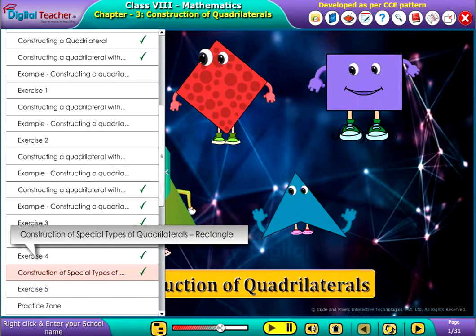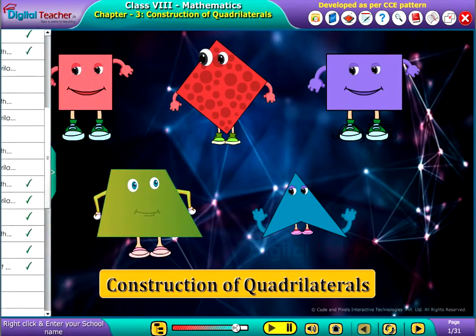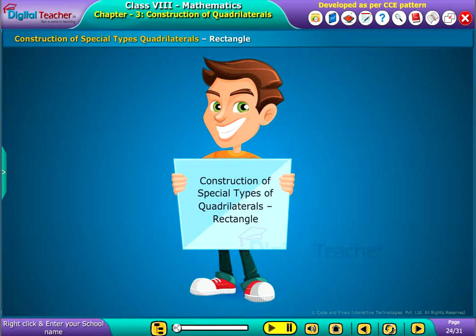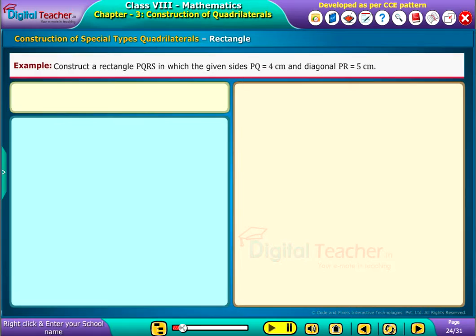Welcome to the chapter on construction of quadrilaterals. Here we are going to discuss the construction of special quadrilaterals. Consider an example: Construct a rectangle PQRS in which the given side PQ equals 4 centimeters and diagonal PR equals 5 centimeters.